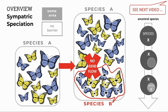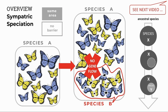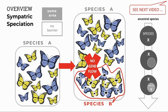Sympatric speciation occurs in the same area where there is no barrier. A group of organisms undergoes changes that make them different to species A over time. Eventually there is no gene flow, they are reproductively isolated, and speciation occurs to form a new species B.